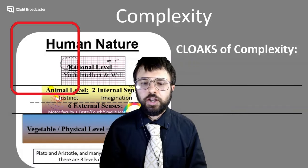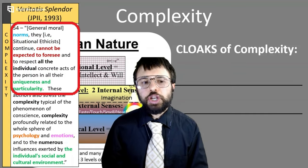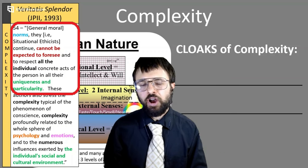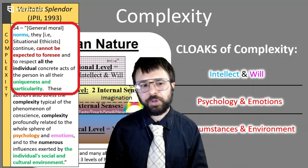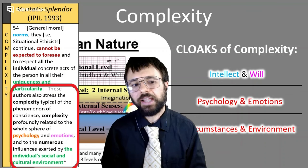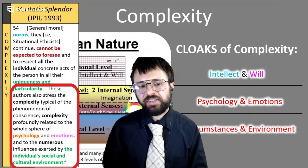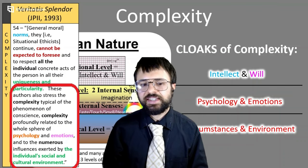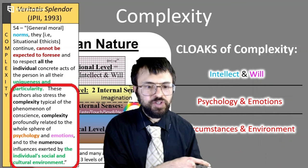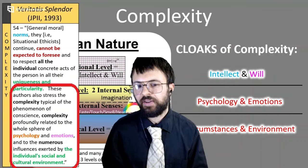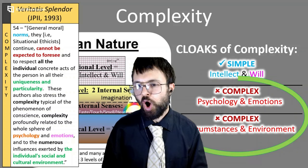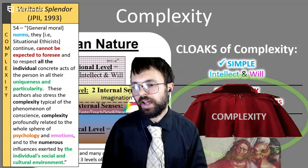First, complexity. John Paul II writes: 'General moral norms, the situation ethicists continue, can't be expected to foresee and to respect all the individual concrete acts of the person and all their uniqueness and particularity.' These authors stress the complexity of the phenomenon of conscience, complexity profoundly related to the whole sphere of psychology and emotions — at the middle animal level — and also in the individual social and cultural environment, down at the physical level.